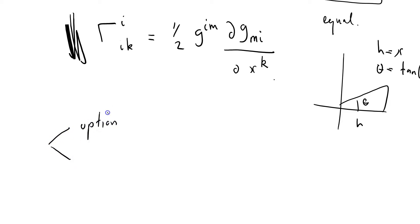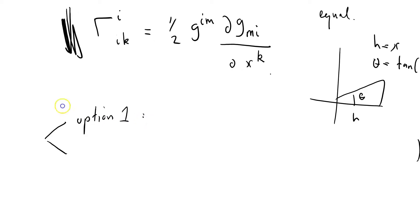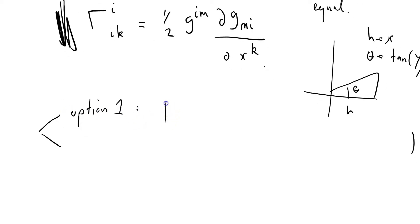So we've got option one, which I'll do right now, is just to state what this equals. Gamma symbol, I, I, K, Christoffel symbol, equals a half G minus 1, di G by di X, K.